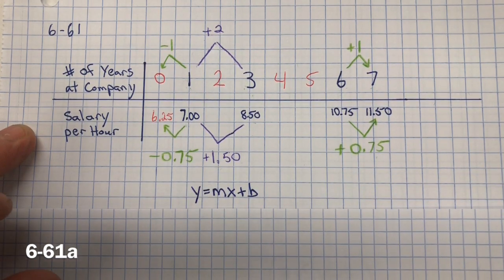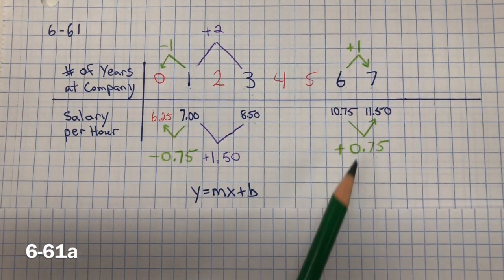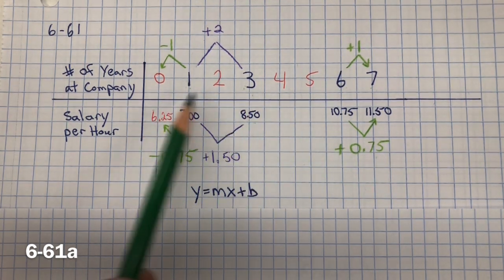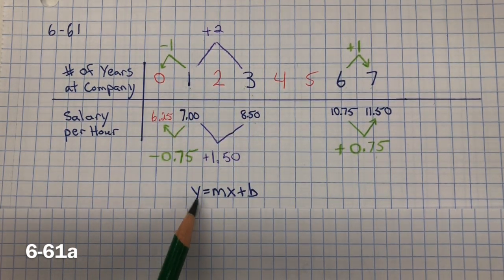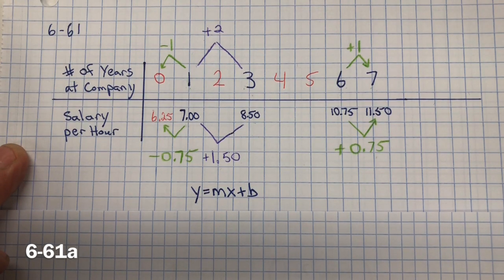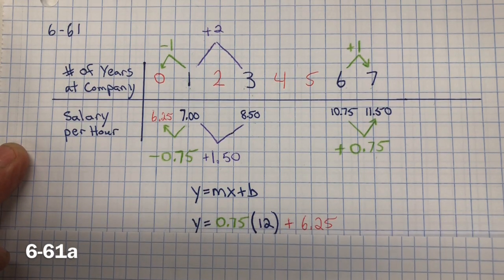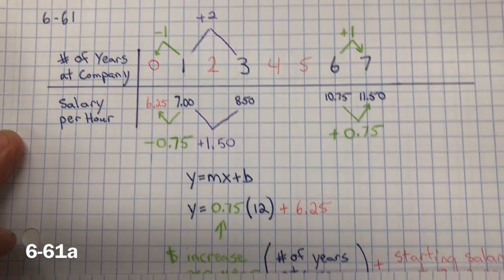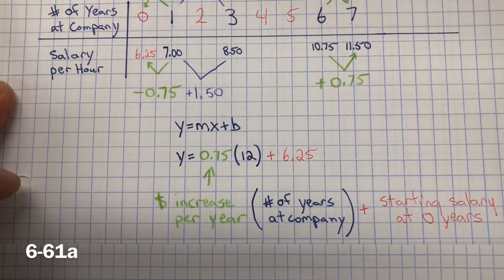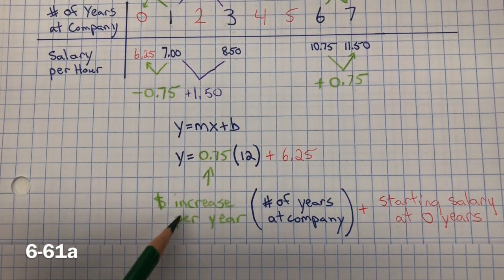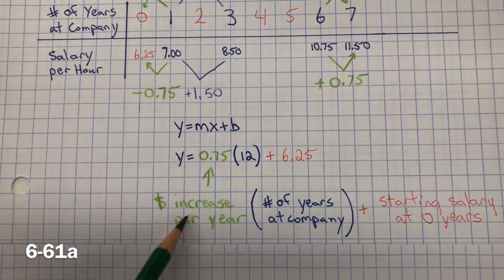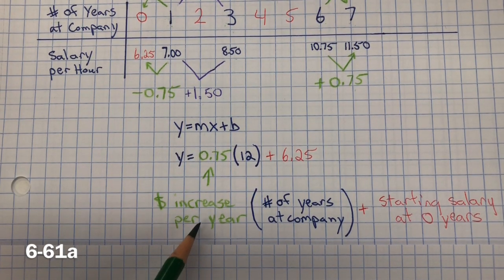But what I did is I created an equation using the formula y equals mx plus b, slope intercept form. So I have 75 cents for the slope or rate of change, the money increase per year.